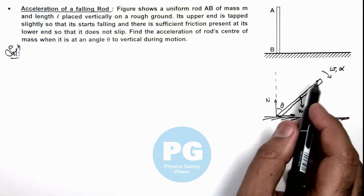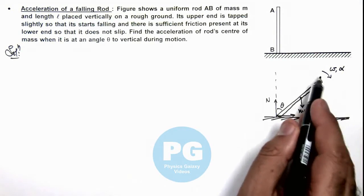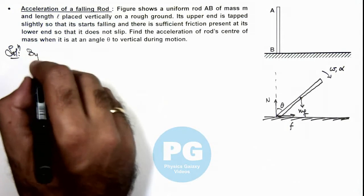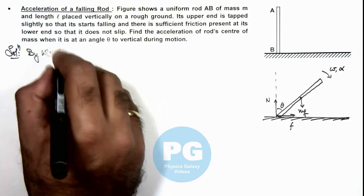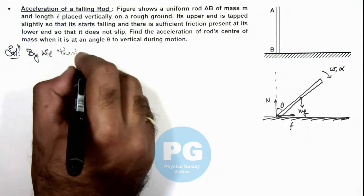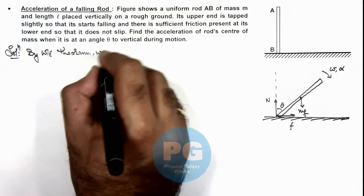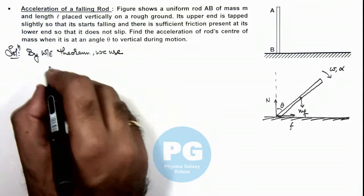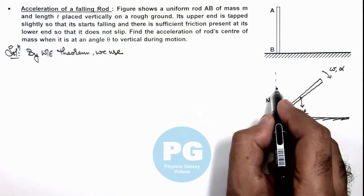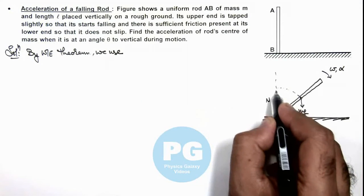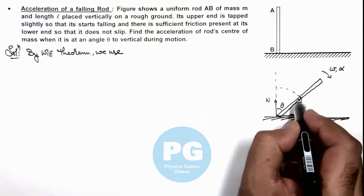We can calculate the value of omega by work energy theorem. By work energy theorem, we use the distance by which its center of mass has fallen, which is l/2 (1 - cos θ).